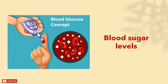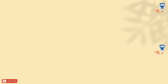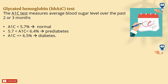Moving to blood glucose levels. We will go through 4 different tests and their results to diagnose diabetes. The first one is the glycated hemoglobin test, or A1c test. It measures the average blood sugar level over the past 2 or 3 months, which is why it is the most accurate. If it is lower than 5.7%, the person is considered normal. If it is between 5.7% and 6.4%, the patient is in the pre-diabetic stage. If it is 6.5% or higher, the patient is considered diabetic.